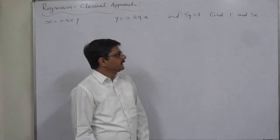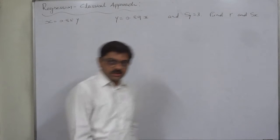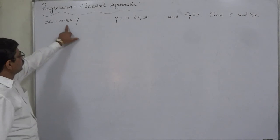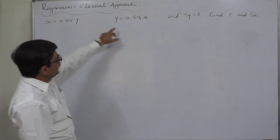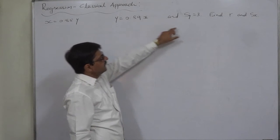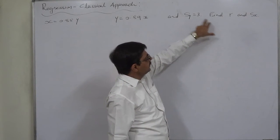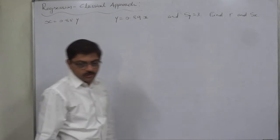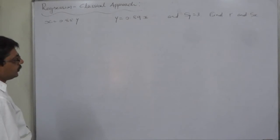Hello and welcome. Again, a small case in regression where x equals 0.85y and y equals 0.89x, and standard deviation of y is 3. Find out coefficient of correlation and standard deviation of x.